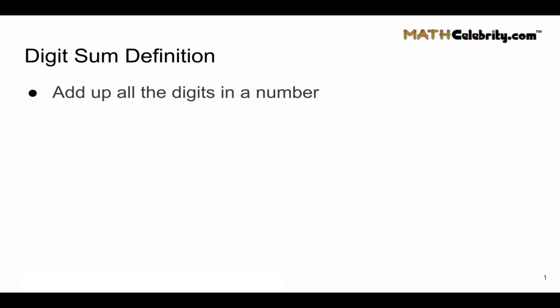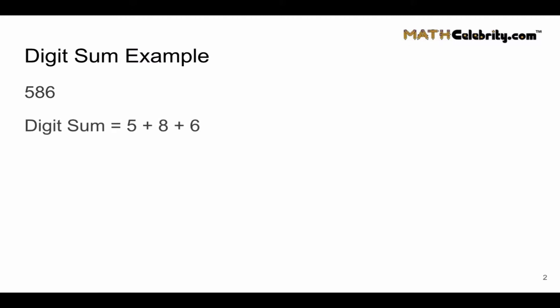Sounds simple enough, let's take an example. Let's take the number 586, so that has three digits. To get the digit sum, we're going to add up all three digits: 5 plus 8 plus 6.